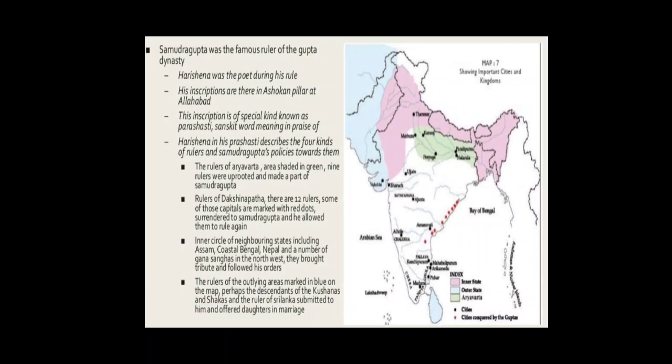Prashastis and what they tell us. Samudragupta, a famous ruler of a dynasty known as the Guptas. We know about Samudragupta from a long inscription inscribed on the Ashokan pillar at Allahabad. It was composed as a kavya by Harishena, who was a poet and minister at the court of Samudragupta. This inscription is of a special kind known as Prashasti, a Sanskrit word meaning 'in praise of'. While Prashastis were composed for some rulers you have read in Chapter 9, such as Gautamiputra Sri Satakarni, they became far more important from the time of the Guptas.